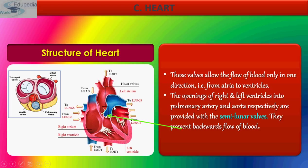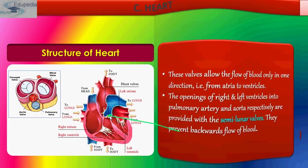The semilunar valves prevent backward flow of blood at the openings of the right and left ventricles into the pulmonary artery and aorta respectively, and they are provided with semilunar valves.